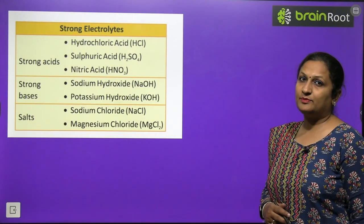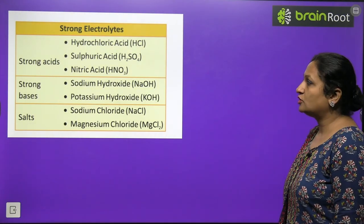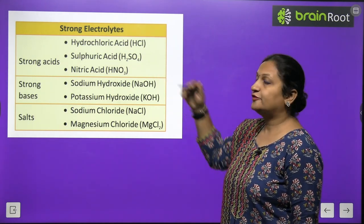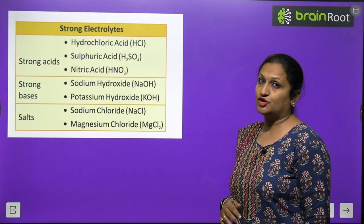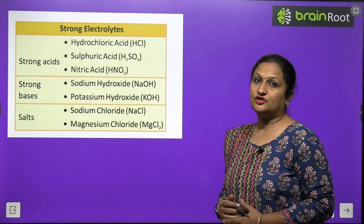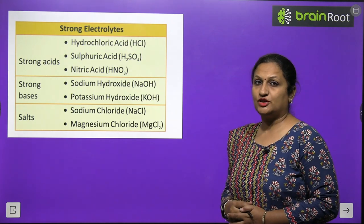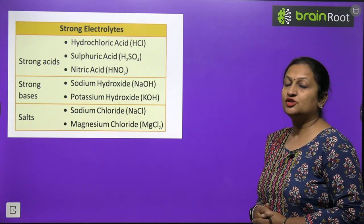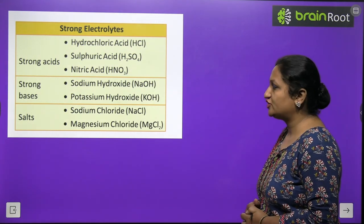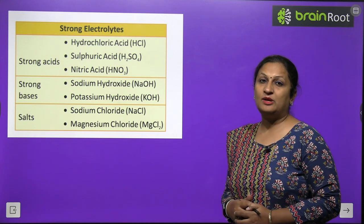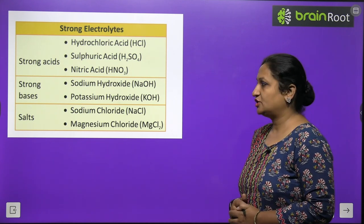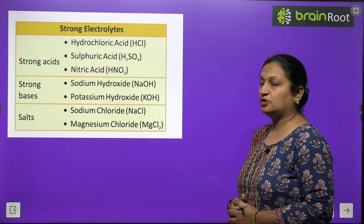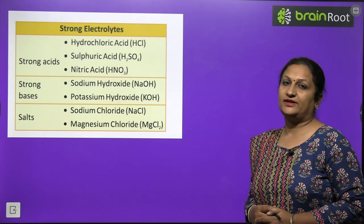Strong electrolytes among acids include hydrochloric acid (HCl), sulfuric acid (H₂SO₄), and nitric acid (HNO₃). Strong bases include sodium hydroxide (NaOH) and potassium hydroxide (KOH). Among salts, sodium chloride and magnesium chloride are strong electrolytes. They are good conductors of electricity.